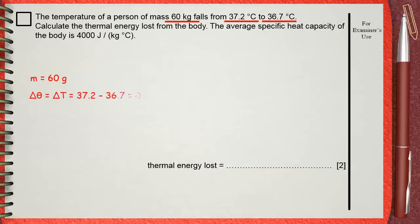36.7 degrees Celsius. This means that delta theta or delta T, the change in temperature, is 0.5 degrees Celsius. The specific heat capacity of the body is 4000 joules per kilogram degrees Celsius.